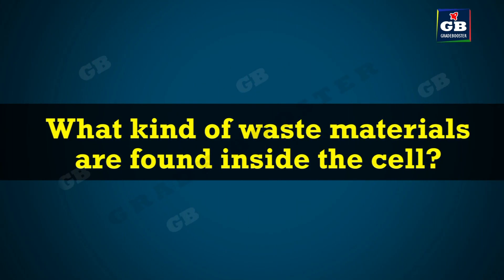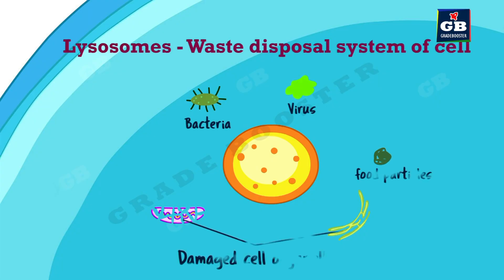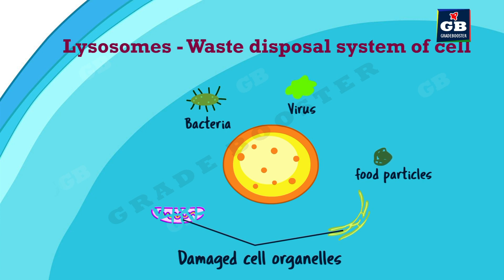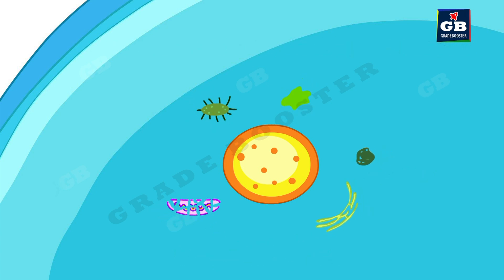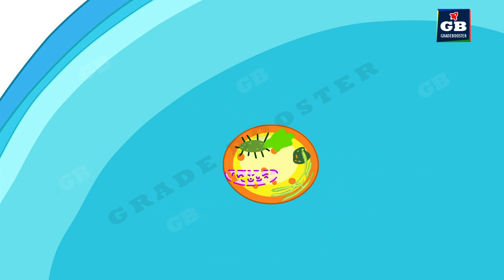What kind of waste materials are found inside the cell? Sometimes a bacteria, virus, or some undigested food particle enters the cell — this is considered waste and has to be removed. Sometimes the parts of the cell are damaged or worn out, and these are also considered waste or unwanted material. These kinds of materials are cleared by lysosomes.